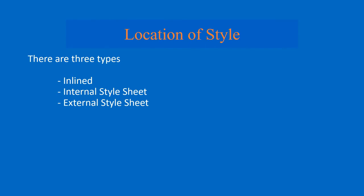Hello, in this video I will discuss about location of style. Location of style means how you can put CSS in the web page - whenever you are writing CSS, how you can add it in the web page, that is called the location of style. There are three types: the first one is called inline CSS, another is called internal style sheets, also called document type style sheets, and the third one is external style sheets.